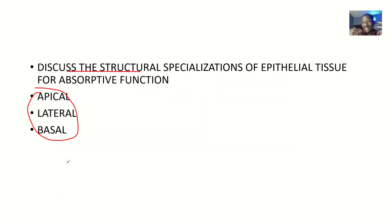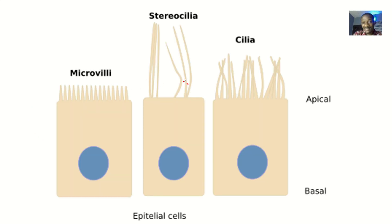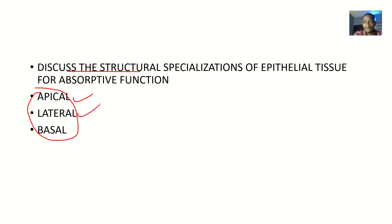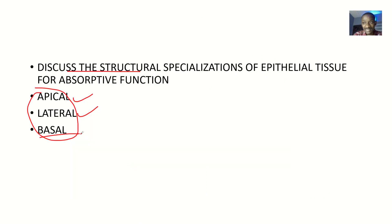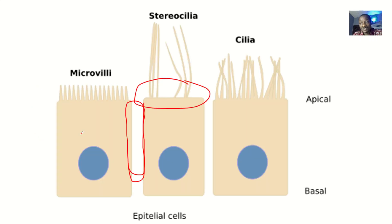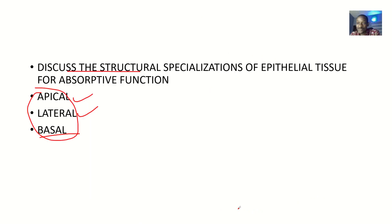The structural specializations are grouped into: the apical structural specialization — how the cell has developed its top for absorption; the lateral specialization — how this cell is communicating with the adjacent cell side by side for absorption; and the basal specializations — how this cell has developed its bottom, maybe to anchor it so it can withstand pressure and absorb for the body.